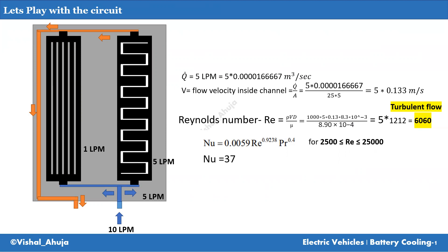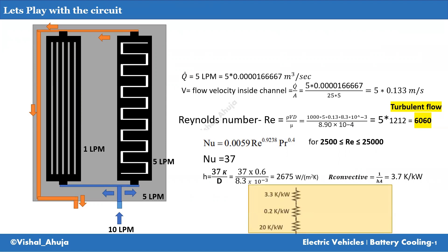This Nusselt number of 37 is 67 times higher than the previous calculation. Plugging it in, you get a heat transfer coefficient of 2675 W/m²·K — a quite high number. So the convective heat transfer resistance now is 3.7 K/kW. Comparing with the previous case where it was 20 K/kW, that is a drastic reduction. Now the thermal paste resistance and the convective resistance are more of the same order, meaning thermal paste will cause relatively more resistance to the flow.